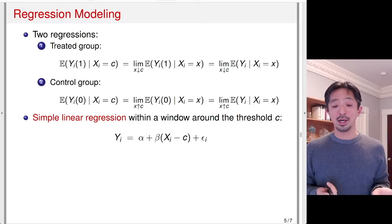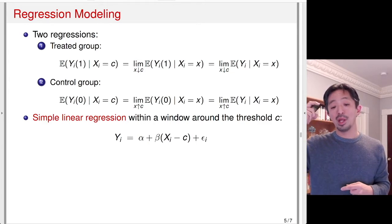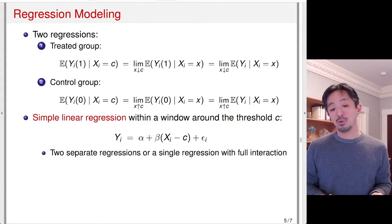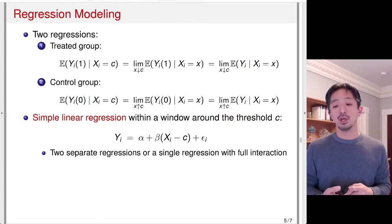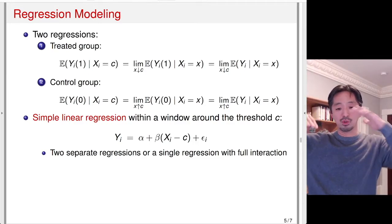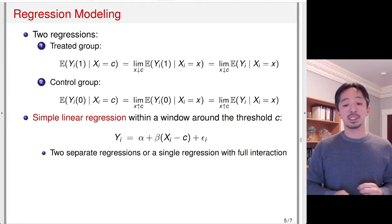In the case of close elections, typically researchers would take say plus or minus two percentage points as a window and then run simple linear regression within each window. You can run two separate regressions as described, or one single regression with full interactions — it's the same thing — interacting with the treatment and the control group, so you have two intercepts estimated separately.